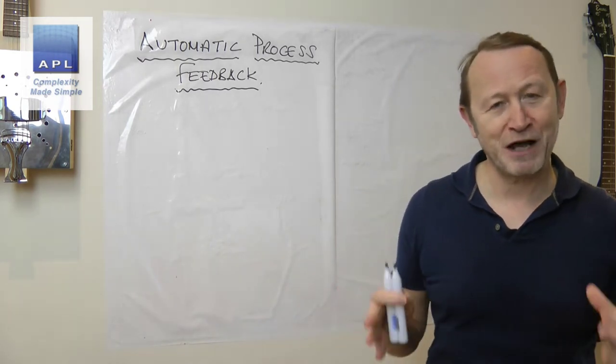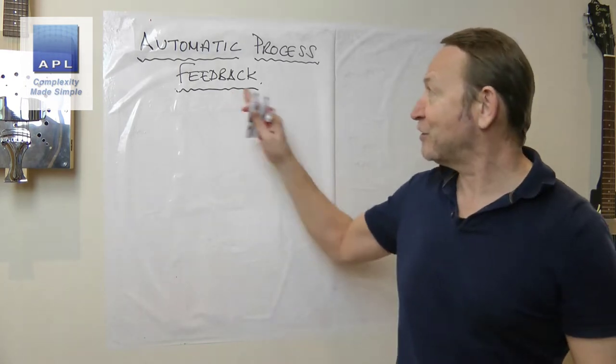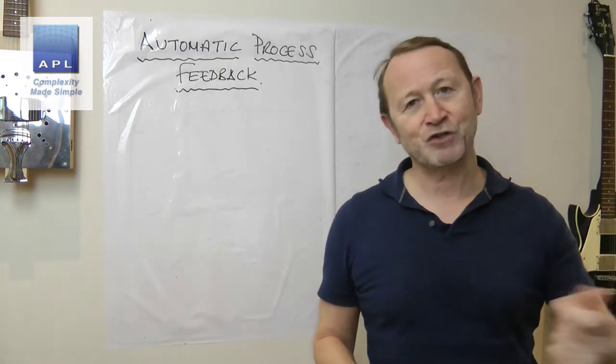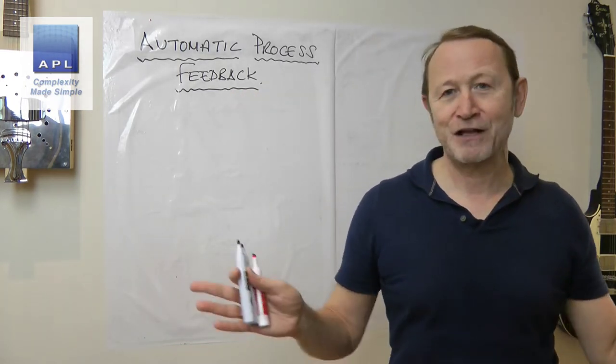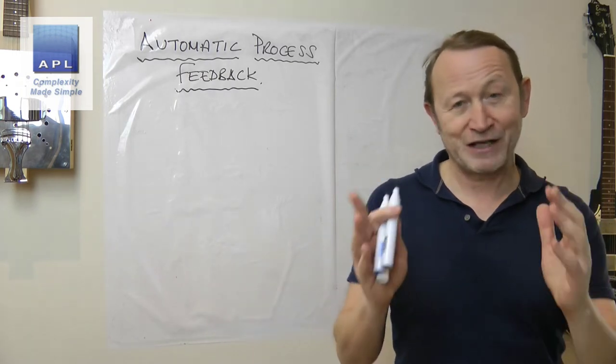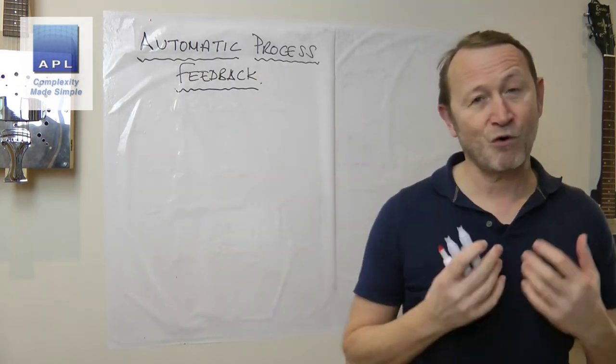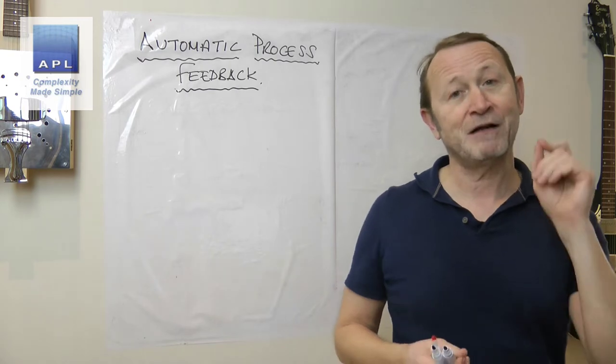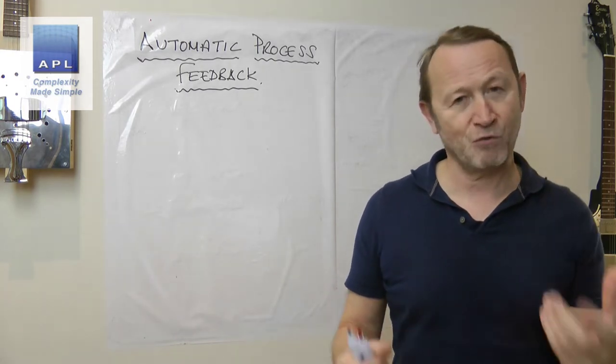If I go to a client and we have a problem with a process and it's got this thing attached to it, I normally tell them to switch it off first. So we're going to talk about what automatic process feedback might be doing and why I want to turn it off.